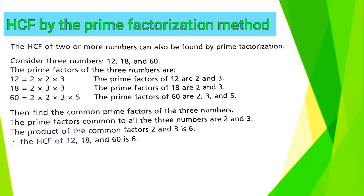The Prime Factors of the 3 numbers are: 12 is equal to 2 × 2 × 3. The Prime Factors of 12 are 2 and 3. Now 18 is equal to 2 × 3 × 3. The Prime Factors of 18 are 2 and 3. In the last, 60 is equal to 2 × 2 × 3 × 5. The Prime Factors of 60 are 2, 3 and 5.